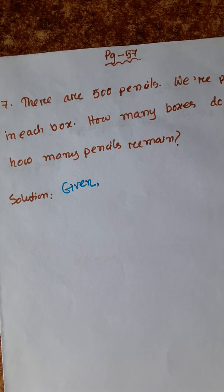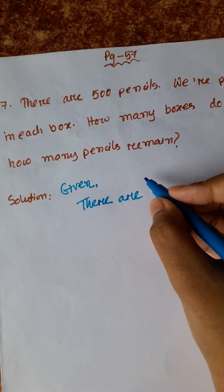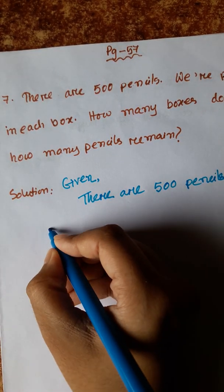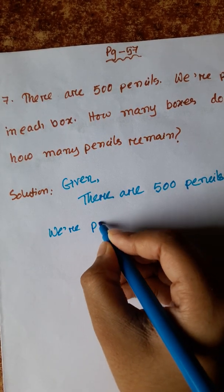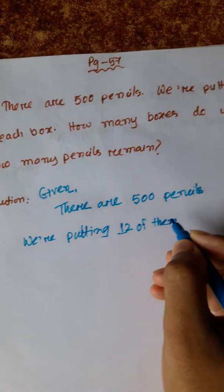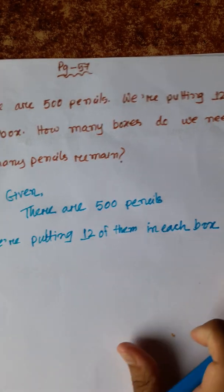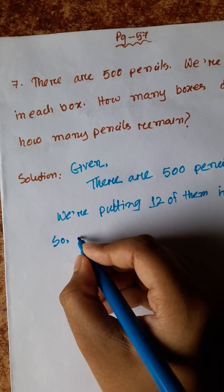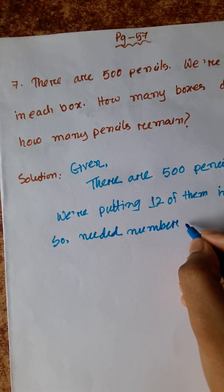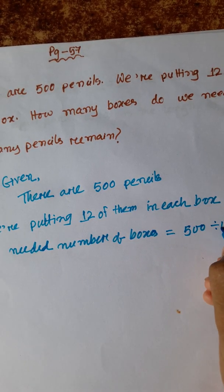Given: there are 500 pencils. We are putting 12 of them in each box. So the needed number of boxes is equal to 500 divided by 12.